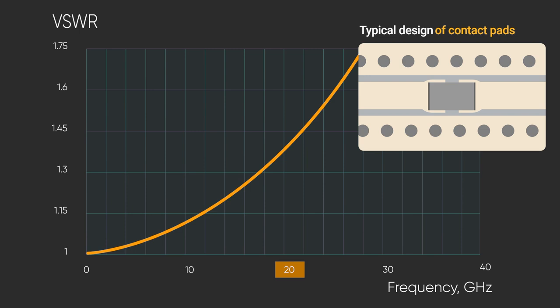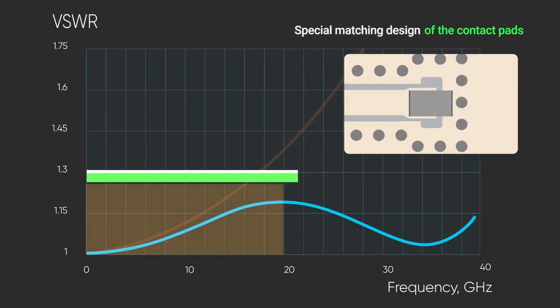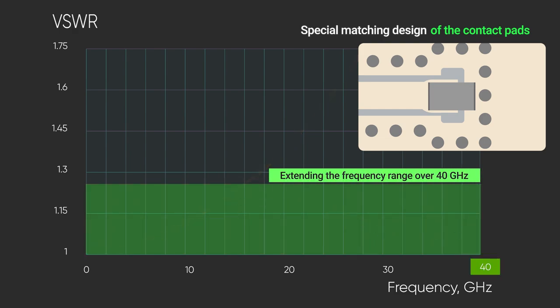The operating frequency range of these resistors can be extended to above 40 gigahertz by using a special matching design of the contact pads on the printed circuit board. All designs offer surface mount flip chip mounting, and special packaging allows precise component mounting.